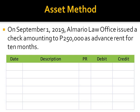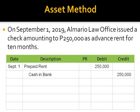Let us first assume that Almario Law Office used the preferred method, the asset method, in recording the prepayment. In that case, on September 1, 2019, the company's accountant would have debited the asset account prepaid rent expense, or simply prepaid rent, for P250,000, and credited cash in bank because the company paid in the form of a check. Hence, the credit is not just to cash, but to cash in bank for the same amount of P250,000.